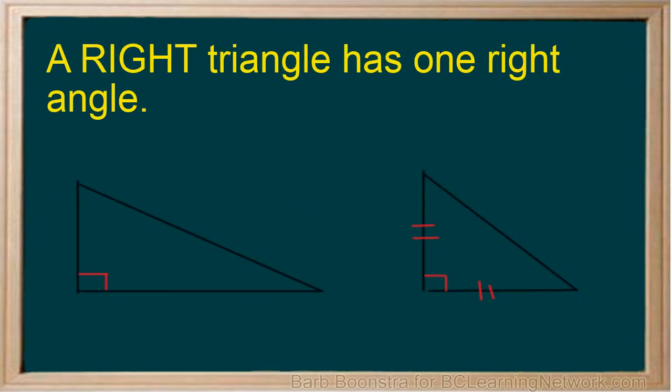A right triangle has one right angle. Notice that right triangles can also be isosceles triangles.